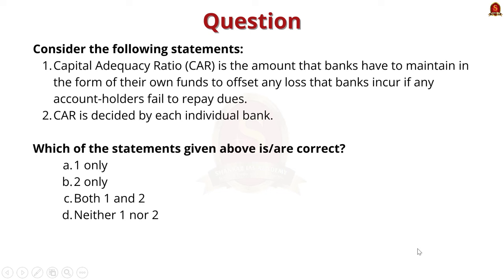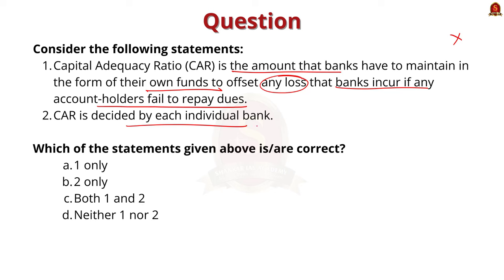Look at this previous year Prelim question. Consider the following statements. Statement 1: Capital adequacy ratio is the amount that banks have to maintain in the form of their own funds to offset any loss that the bank incurs if any account holder fails to repay. Statement 2: Capital adequacy ratio is decided by each individual bank. Which of the statements given above is correct? Option 1 only, 2 only, both 1 and 2, or neither 1 nor 2. This question tests your understanding of capital adequacy ratio.